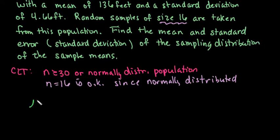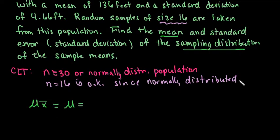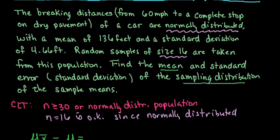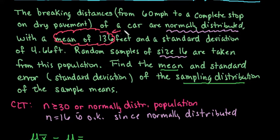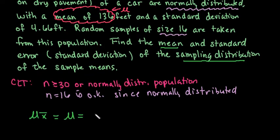With a mean — that's mu sub x-bar, the mean of the sampling distribution — that is going to approach the mean of the population. So when it asks you to find the mean of the sampling distribution of the sample mean, remember that it equals the mean of the population. In this problem, the mean of the sampling distribution of the sample means is 136 feet.